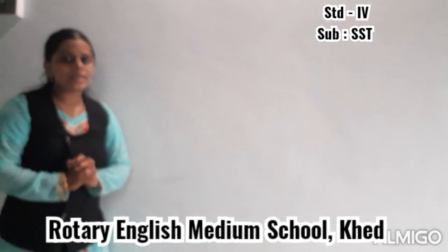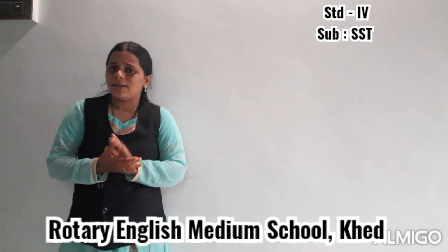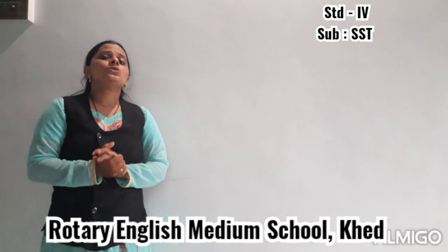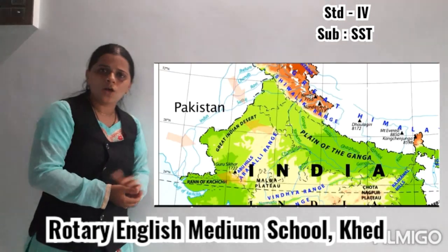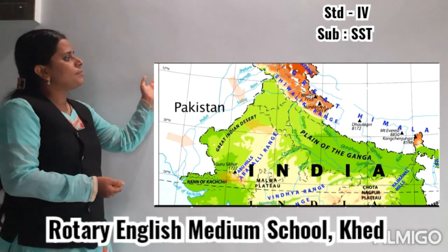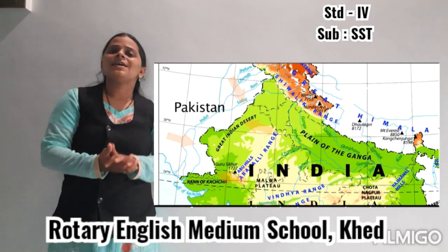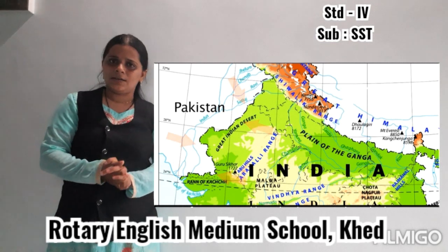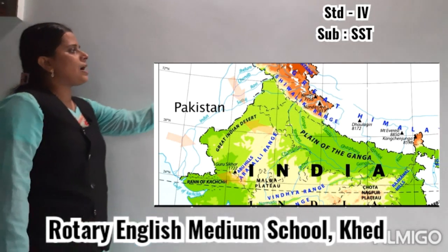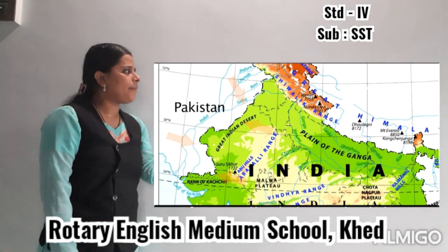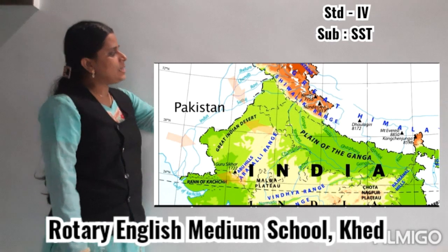Now if we talk about the Thar Desert, it is located in the northwestern part of India. This desert is also known as the Great Indian Desert. Let's talk about the location — it is located to the west of Aravli Hills. Now you have seen the map. Can you see the Aravli Hills over here? If you see the Aravli Hills, up is north, down is south, and to the side is east.